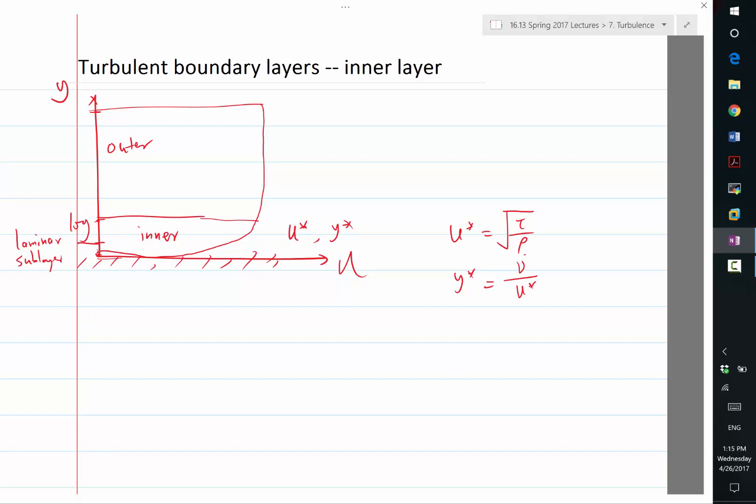The outer layer's only velocity scale is still U star, which relates to the wall shear stress, but not the viscosity anymore. In some sense, the outer layer doesn't know what the viscosity is anymore. That, again, is an assumption of high Reynolds number flows.